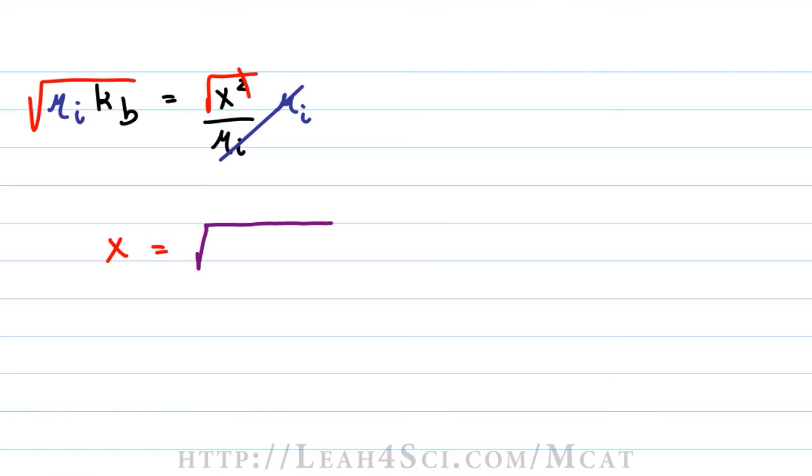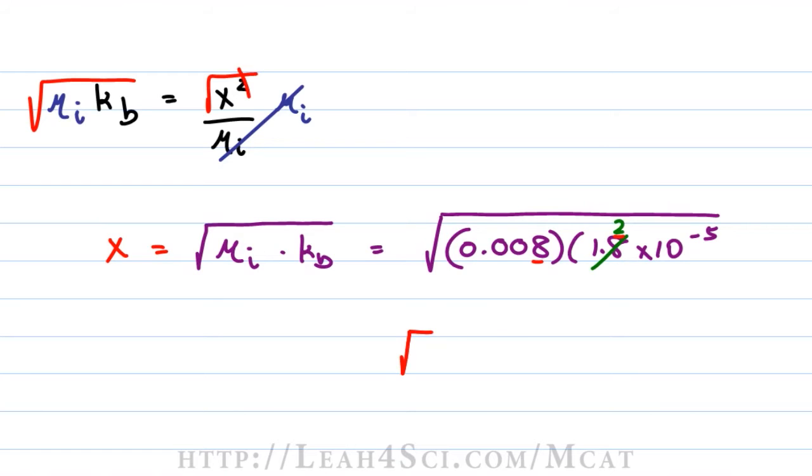This gives me a new expression. X equals the square root of the molarity initial times the KB which we'll plug in, the molarity initial is 0.008 and the KB is 1.8 times 10 to the minus 5. Now how do we solve this quickly without a calculator? Let's run some estimations. 1.8 is approximately 2 so we have 2 times 8 which is 16.